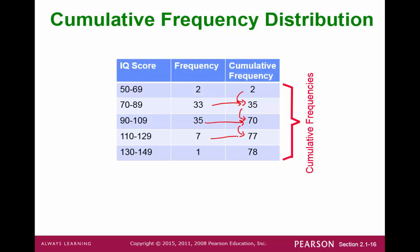And then 70 plus 7 is 77. And then finally you get 78. And whenever you deal with a cumulative frequency table, this very last number is the same as the total.